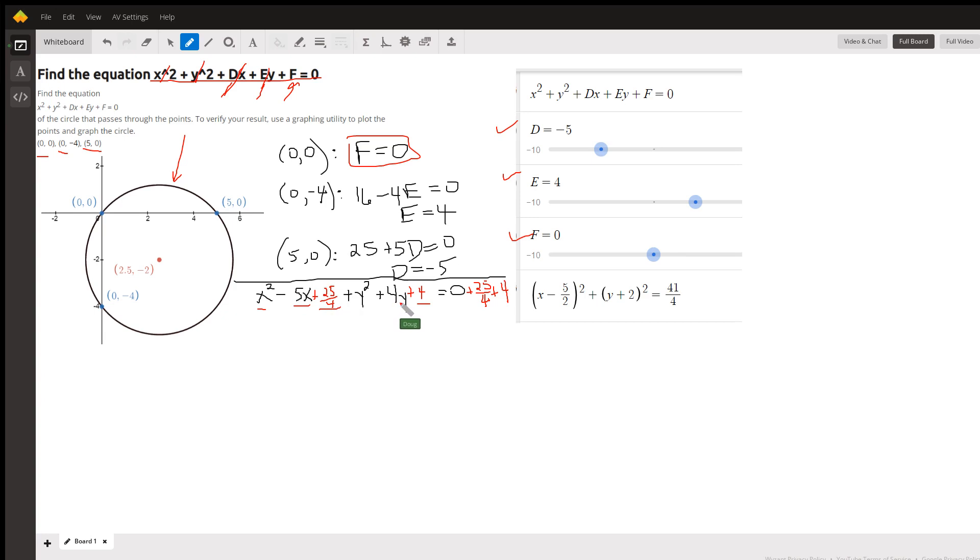And Y squared plus 4Y, complete the square, half of 4 is 2, 2 squared is 4.